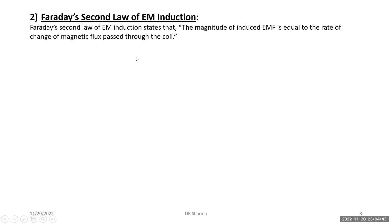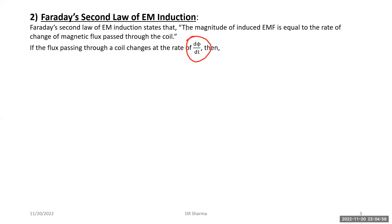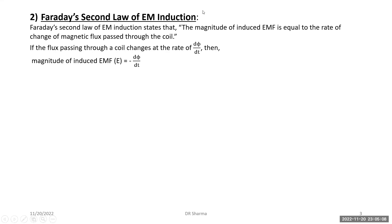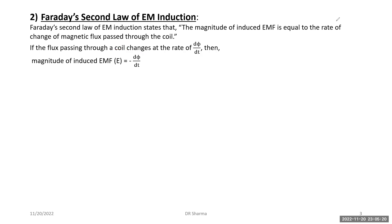Faraday's second law talks about the magnitude of induced EMF. According to this law, the magnitude of induced EMF is equal to the rate of change of magnetic flux through the coil. If the flux changes at the rate of dφ/dt, then in mathematical form, Faraday's second law is expressed as e = −dφ/dt. The negative sign indicates that the induced EMF always opposes the flux change.